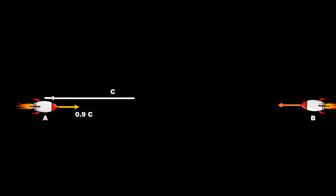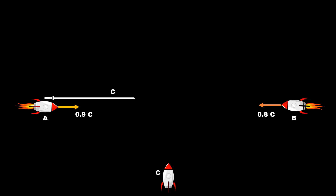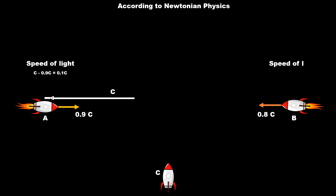To understand this, consider observer A moving at a speed of 0.9c who flashes a flashlight, observer B approaching in the direction of observer A at a speed of 0.8c, and a third observer C who is at rest. All three observers observe the light emitting from the flashlight. According to Newtonian physics, the speed of light for observer A should be 0.1c, for observer B should be 1.7c, and for observer C should be 1.9c. But according to Einstein's Special Theory of Relativity, all three observers, since they are all inertial frames, will measure the same speed of light.